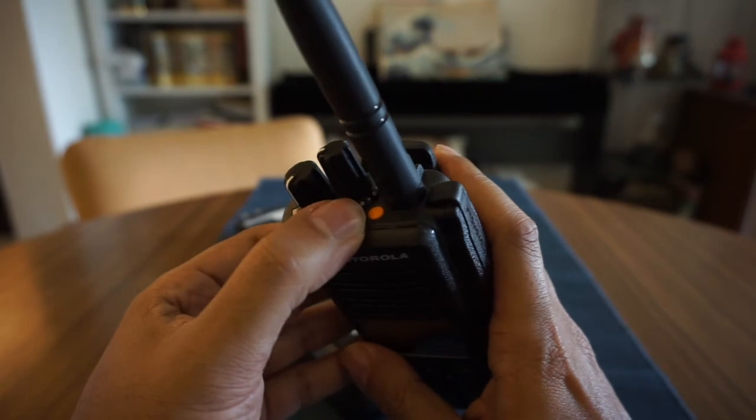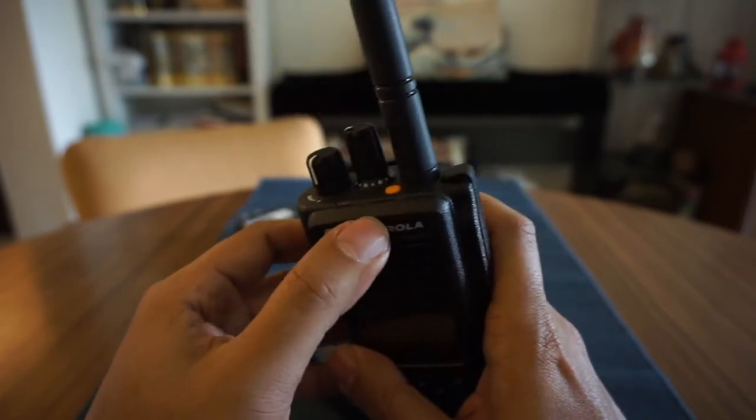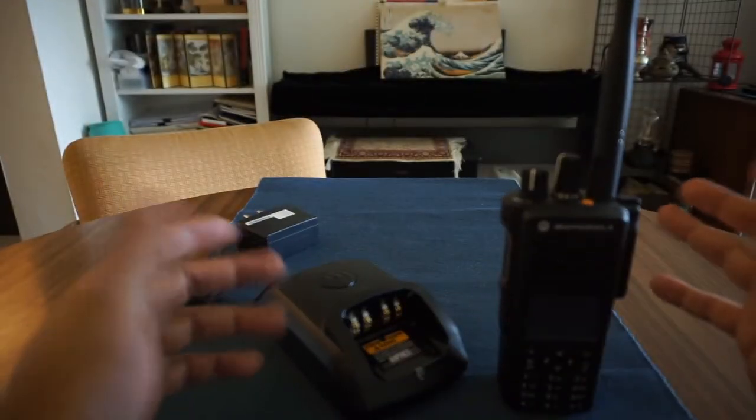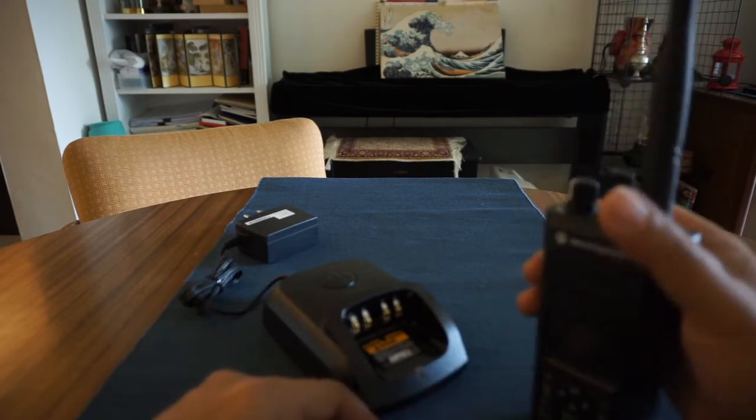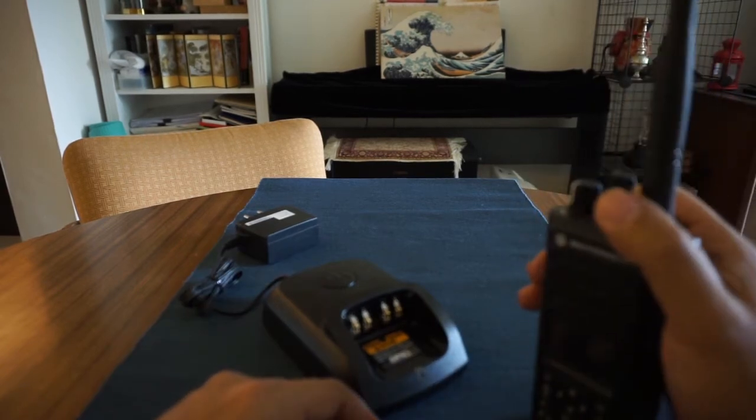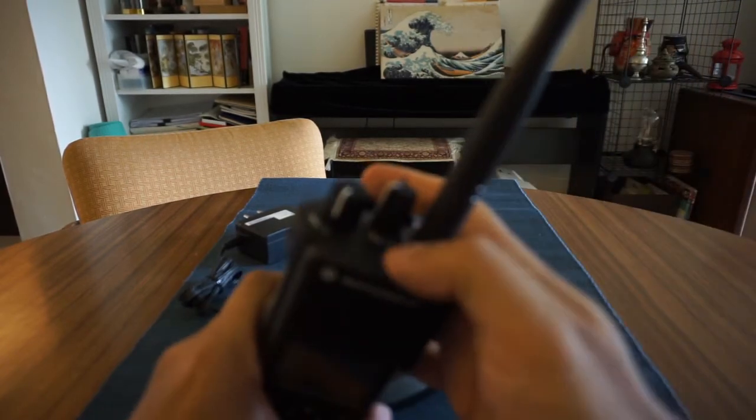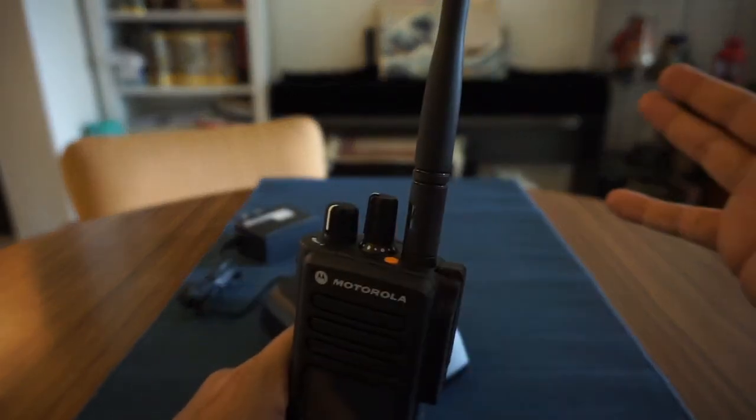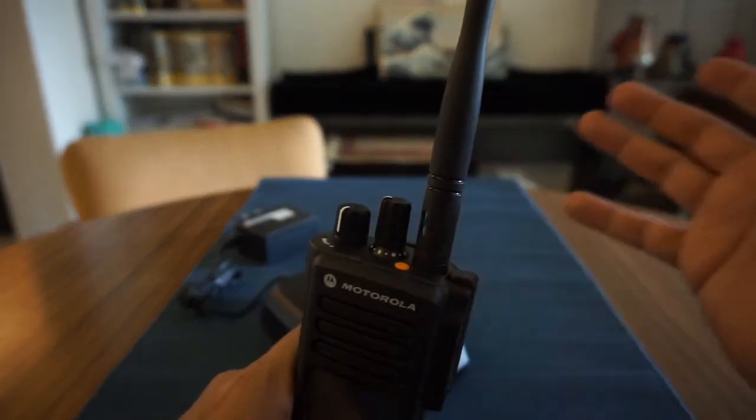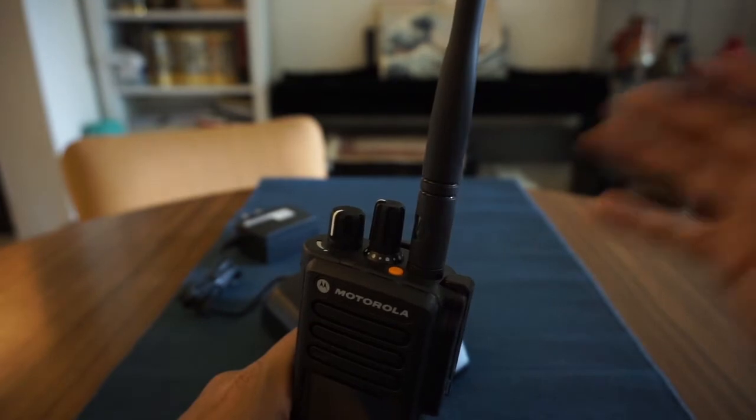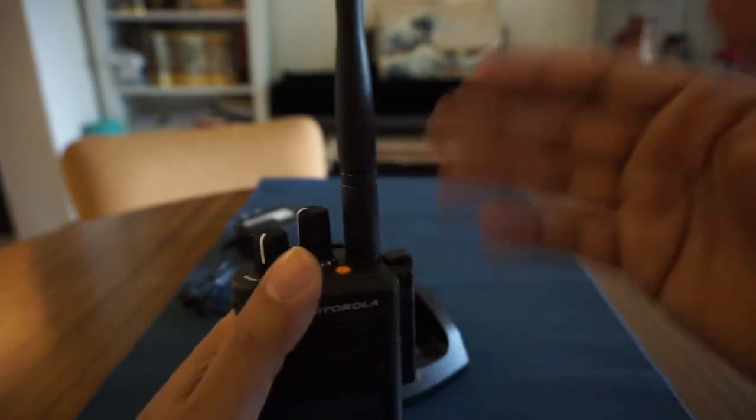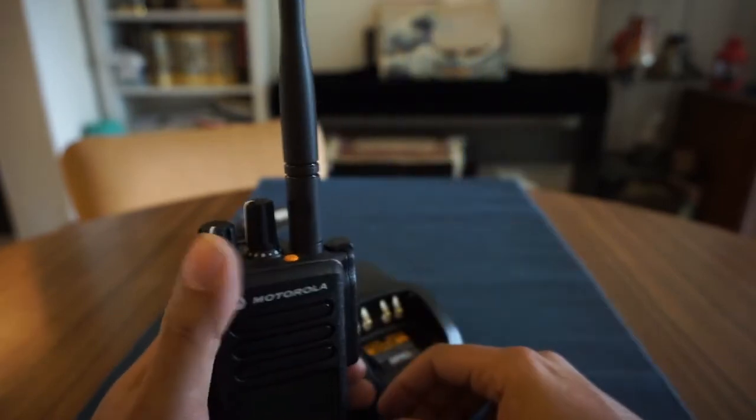This little orange button here is basically an emergency call button. So let's say you're in a situation, you've got your radio on you, something's happened, you can't actually make a call and call for help. You can basically just hit that button and then it will send a signal to others, or you'll send a signal to the base station and they'll be able to hear everything that's going on.